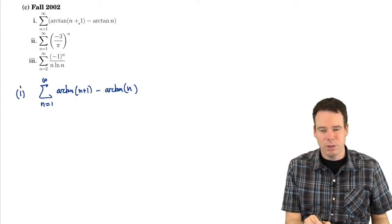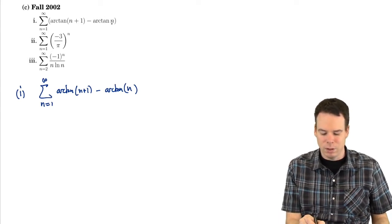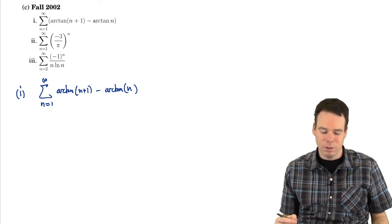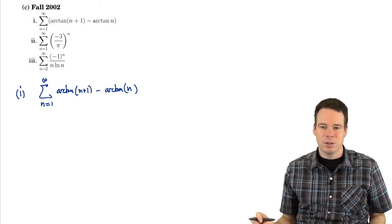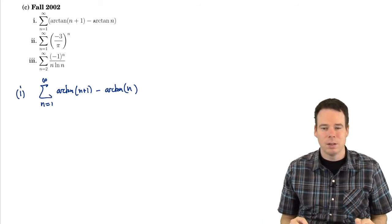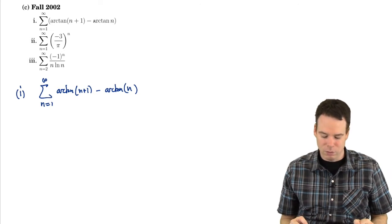Well as n gets really big, arc tan of n plus 1 goes to π by 2, arc tan of n goes to π by 2, π by 2 minus π by 2 is 0. Terms are going to 0, so there is a potential that this thing could converge. Let's check to see if we can apply one of our other tests to determine whether it does converge or not.